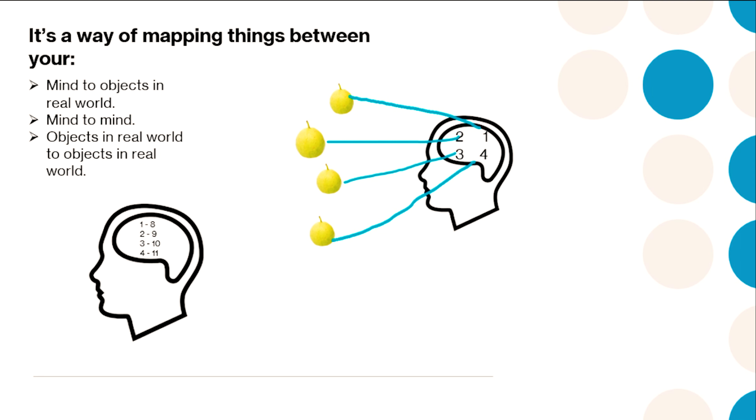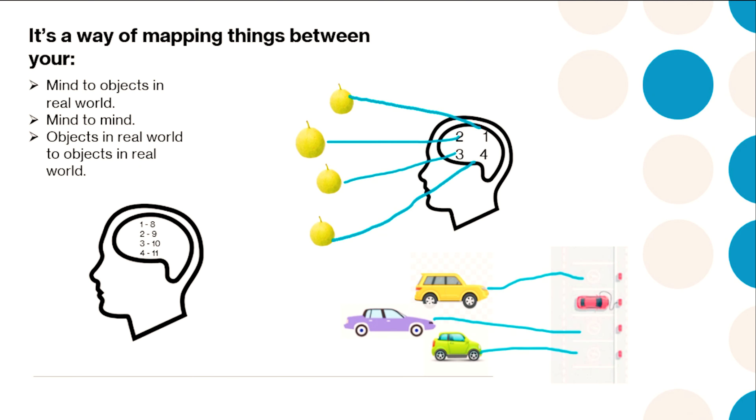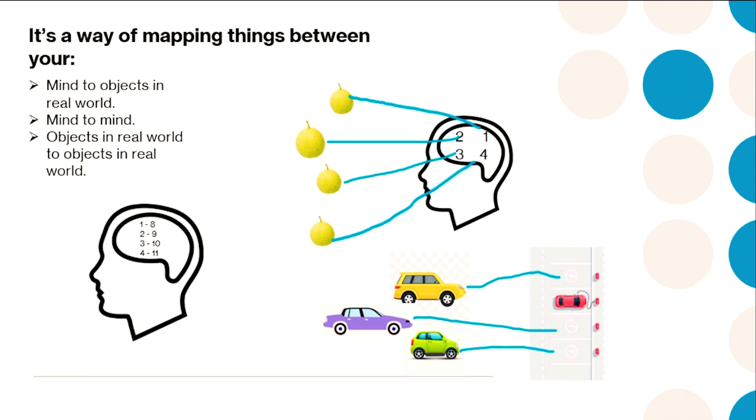There's also mapping from mind to mind. You think of four numbers like 8, 9, 10, 11 — how do you know it's four? Because there is a parallel set like 1, 2, 3, 4 and you map between them: one to eight, two to nine, three to ten, four to eleven. Similarly, you map objects from the real world to real world — like three parking slots: one car going here, second going there, third going there. That's how you know there are three spots.